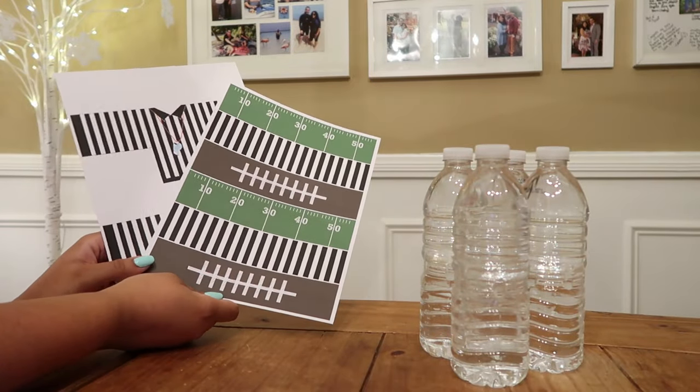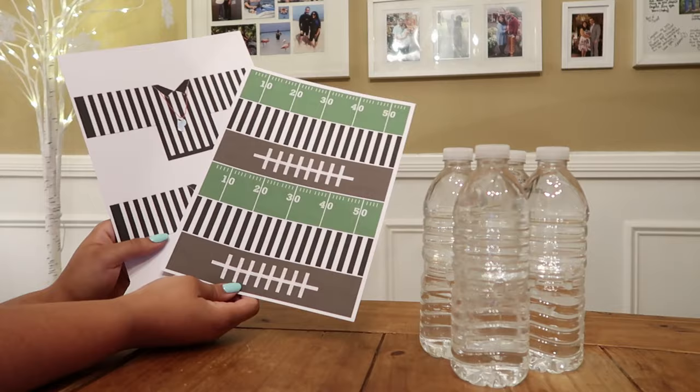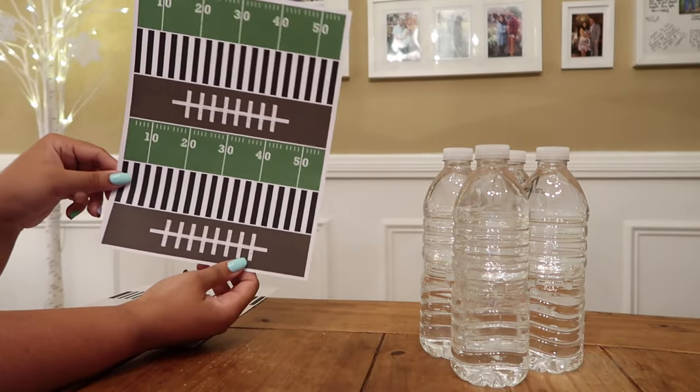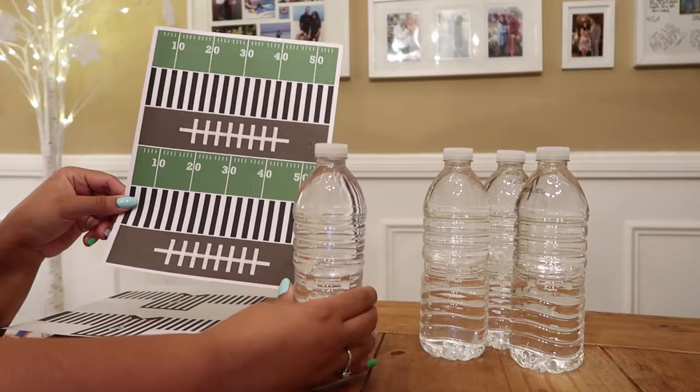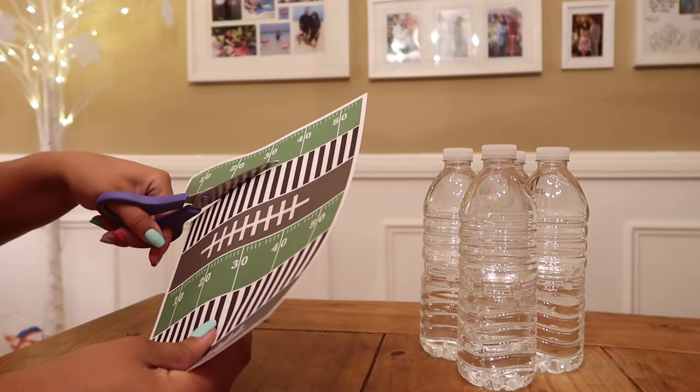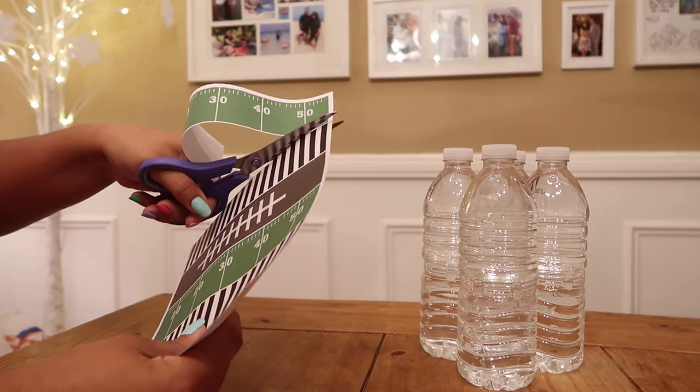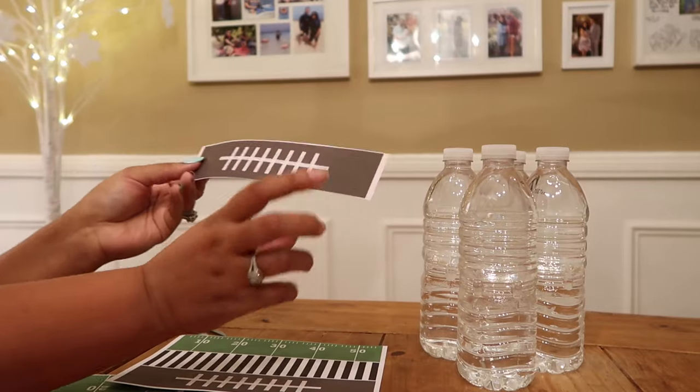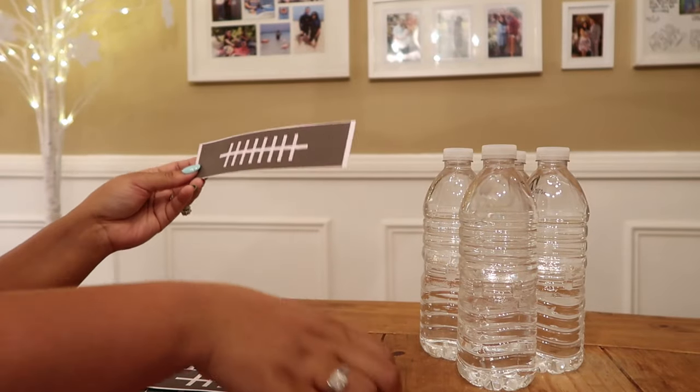These images that I found off of Google, they were free. Basically what we're going to do is cut these different strips and wrap the sleeve around the water bottle. This would also make cute cupcake liners, you can wrap this around your cupcake the same way that we're going to wrap it around our water bottle.